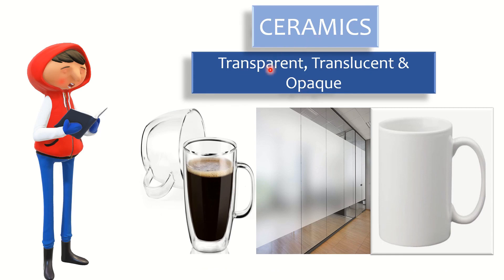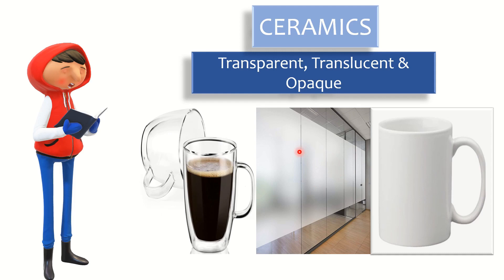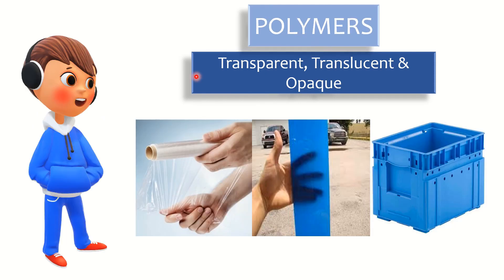Ceramics can be transparent, translucent, and opaque. That means they can transmit visible light, they can half-transmit visible light — like a blur glass where you can observe something is there beside the glass but cannot see it clearly — and a ceramic cup where you cannot see what is inside. So ceramics can exhibit all these properties. Polymers also — they are transparent, translucent, and opaque.